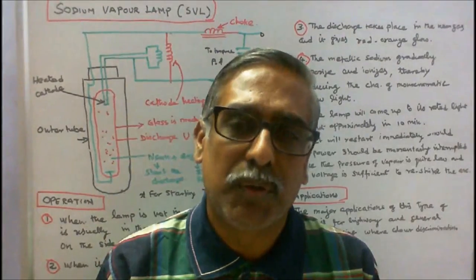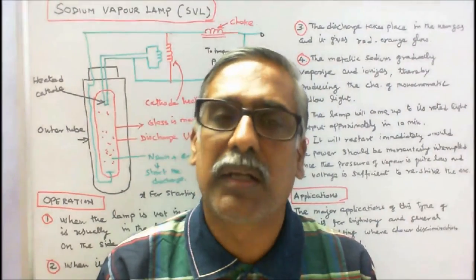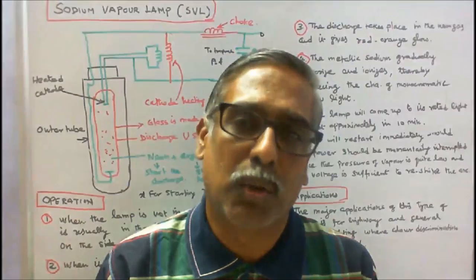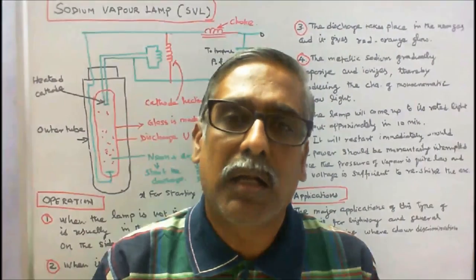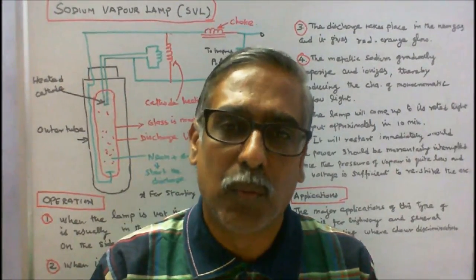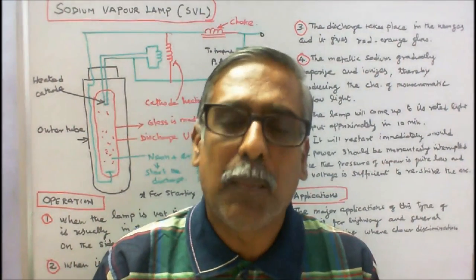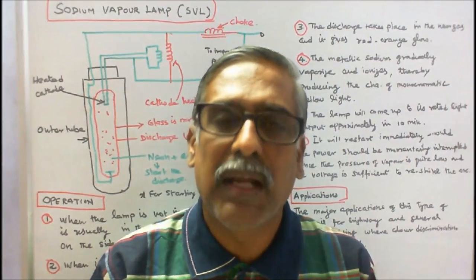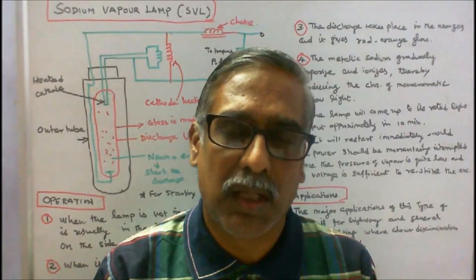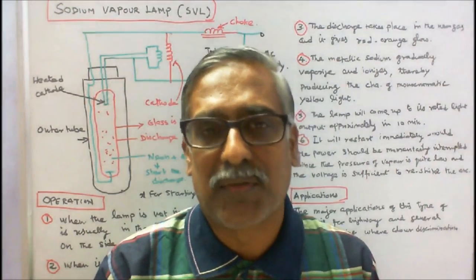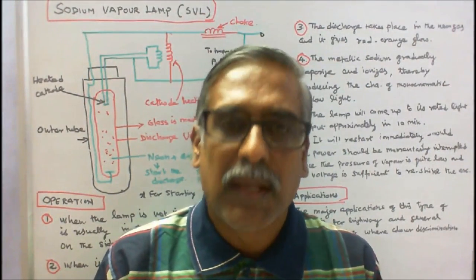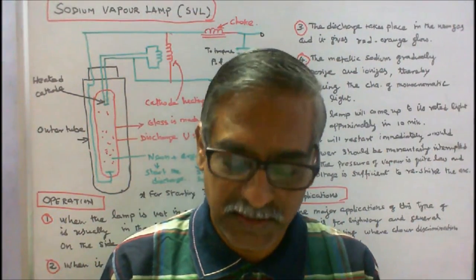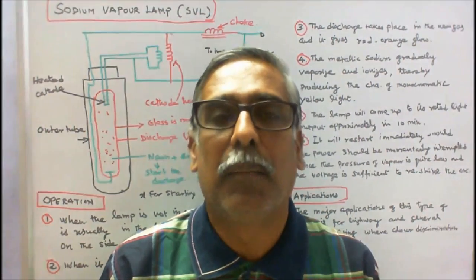Sodium vapor lamp is suitable for alternating current and therefore requires choke control. A voltage of the order of 380 to 450 volts depending upon the lamp is necessary to start discharge, which is obtained from a high reactance transformer or an auto transformer. Its operating power factor is 0.3, hence suitable capacitor must be used to improve the power factor.